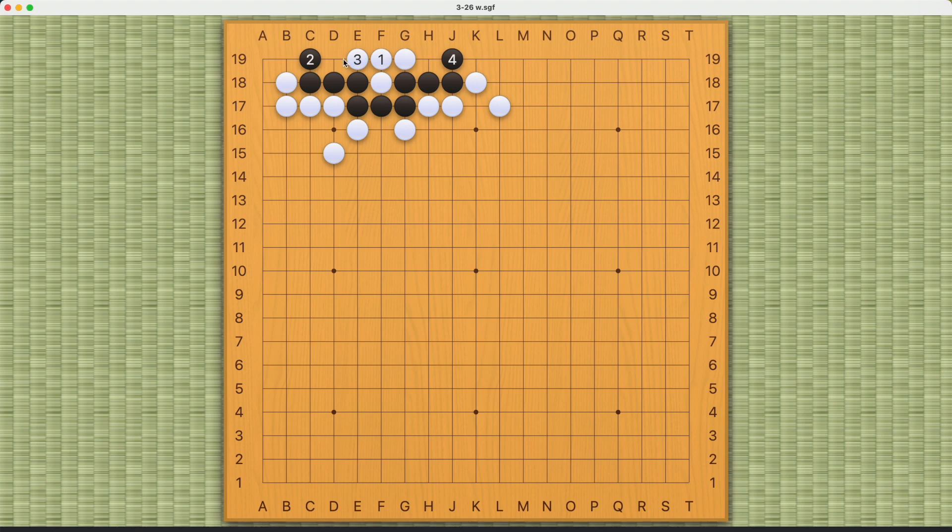And of course, black cannot fill in either of these empty intersections. And that's why this is a seki or mutual life pattern. And that means if white plays at number one, black will be able to live.